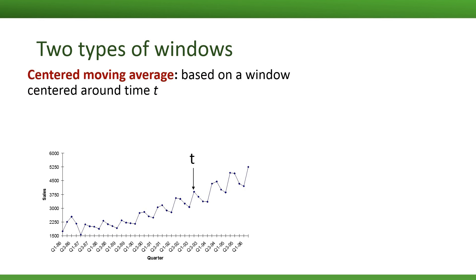The first type of window is called a centered window. A centered moving average is going to be based on a centered window, which is centered around time period t. A second type of window is a trailing window. So a trailing moving average will be based on a trailing window, which is placed at time t and goes back.